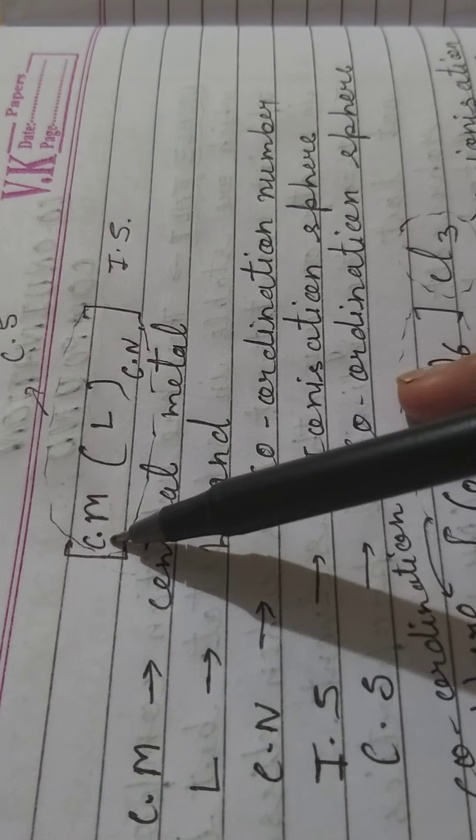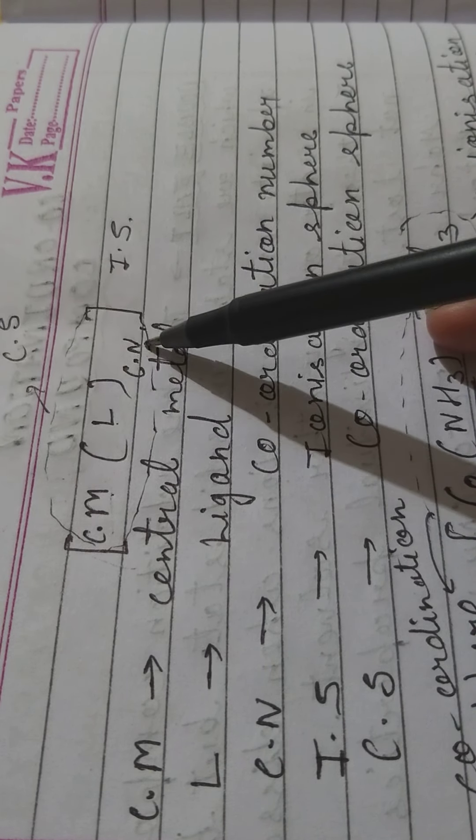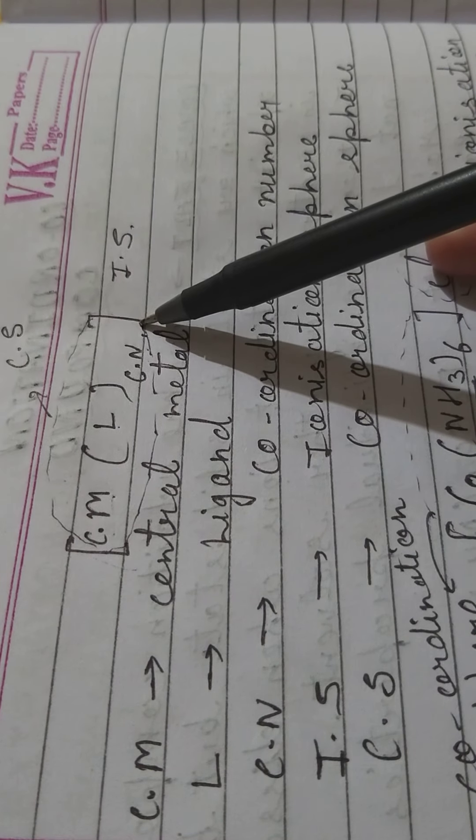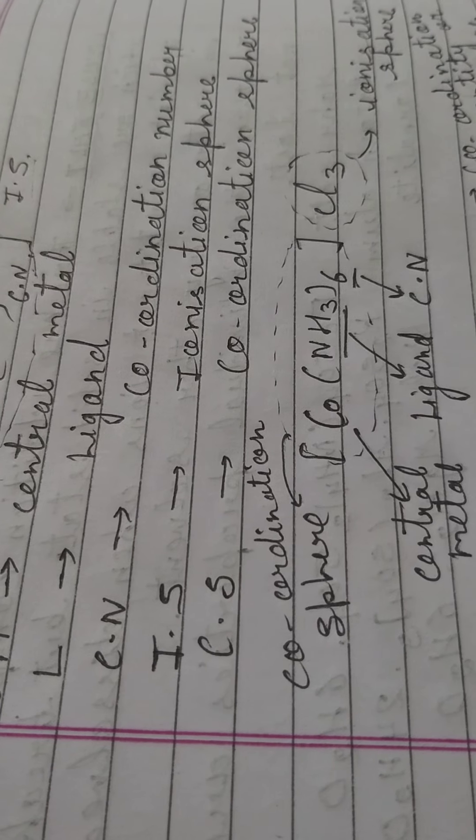Let's understand how a coordination compound is represented. First we make a square bracket; inside it we mention the central metal (CM), surrounded by the ligands. The number of ligands is denoted by CN — the coordination number. The part which comes outside the square bracket is called the ionization sphere, and the part inside the square bracket is called the coordination sphere.